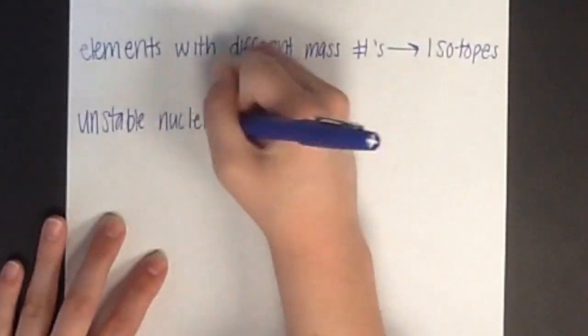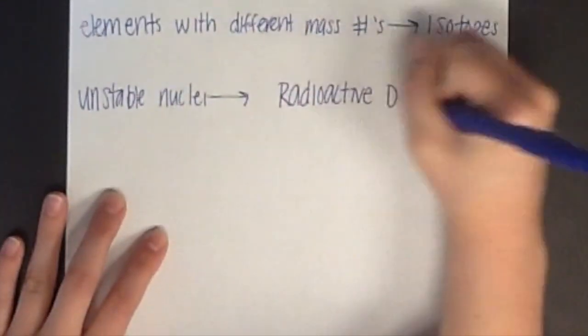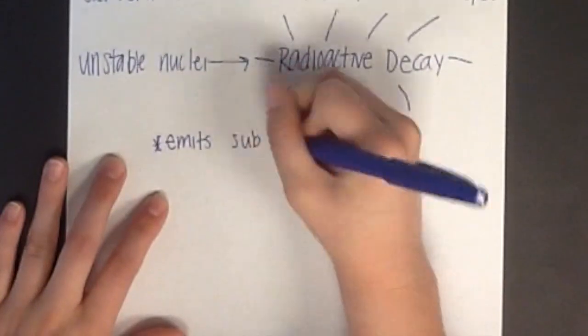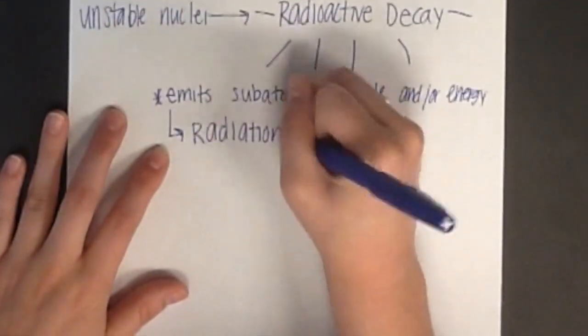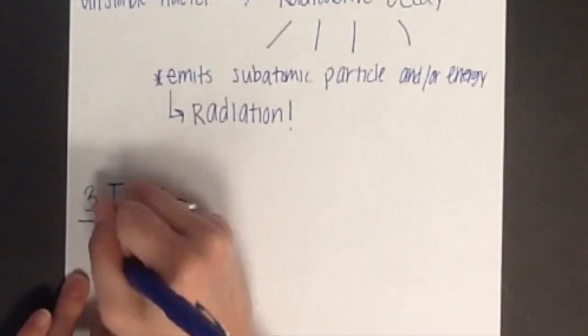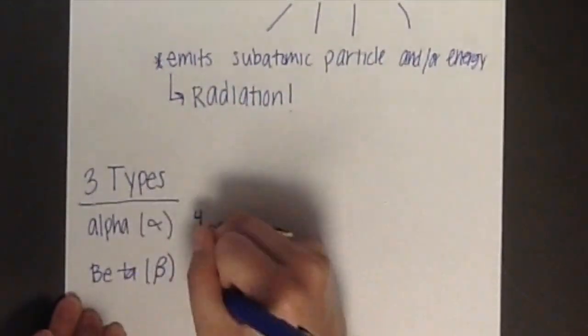Sometimes, the nuclei of atoms are unstable. This leads to a process of radioactive decay, when the nucleus emits some atomic particles or energy, which is referred to as radiation. There are three types of radiation: alpha, beta, and gamma.